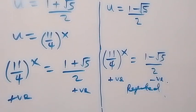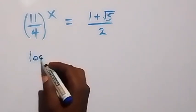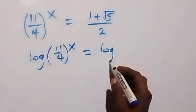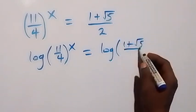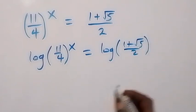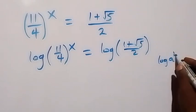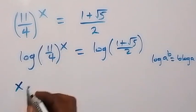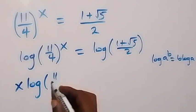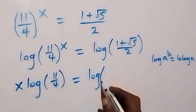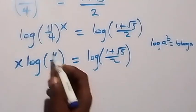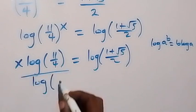Taking log on both sides gives us log of (11/4)^x equals log of (1 plus root 5) over 2. Applying the power law of logarithm — log a^b equals b log a — we get x times log(11/4) equals log((1 plus root 5) over 2). Dividing both sides by log(11/4) isolates x.